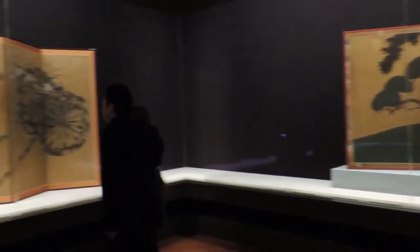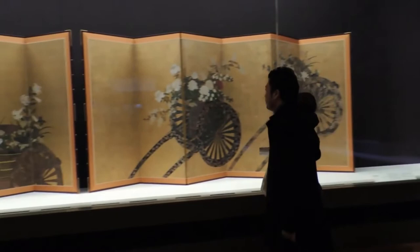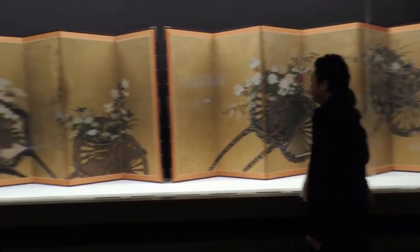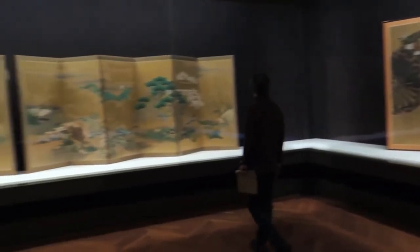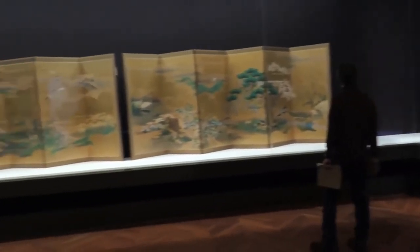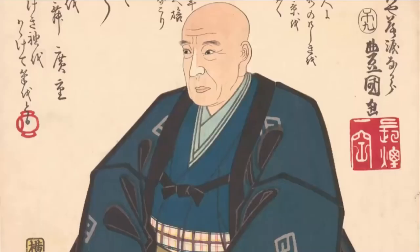Early ukiyo-e were painted by hand. Artisans later started carving images into blocks of wood and using these blocks to print ukiyo-e in large numbers. Ukiyo-e printmaking was a team effort between the publisher, the artist, the woodcarver, and the printer.